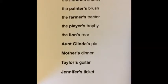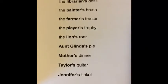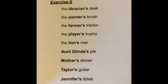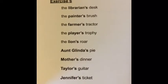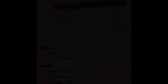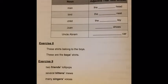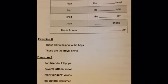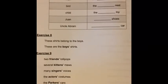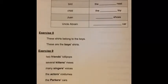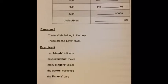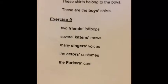Look at exercise six — we have different phrases like 'the librarian's desk.' Whose desk is it? It's the librarian's desk. 'Librarian' is just a noun, but that magic apostrophe s turns that noun into an adjective. Underline the adjectives that tell whose, and push play when you're ready to go on. In exercise seven you have a chart with singular nouns — man, bird, child, Juan, Uncle Abram — and you're going to use that magic apostrophe s to turn each noun into an adjective that tells whose. Push pause and complete the chart.